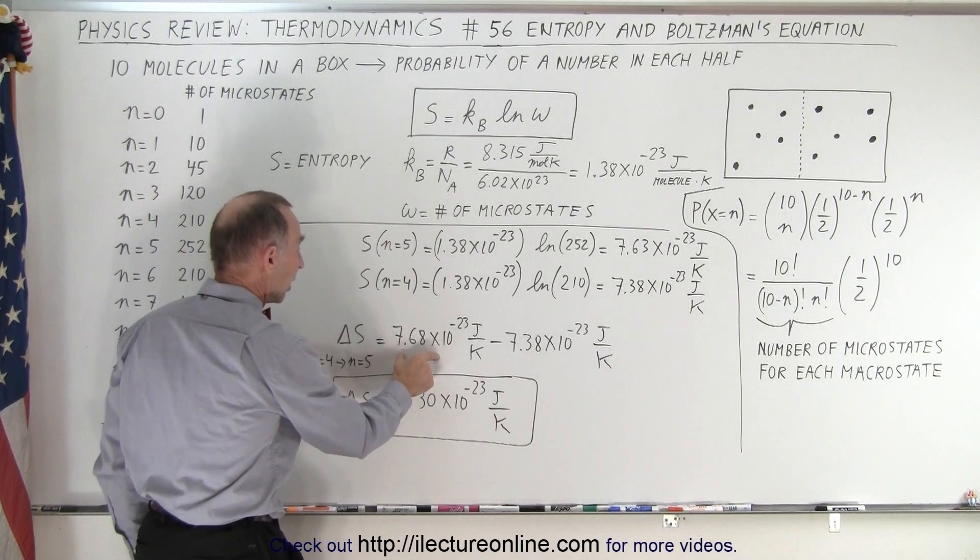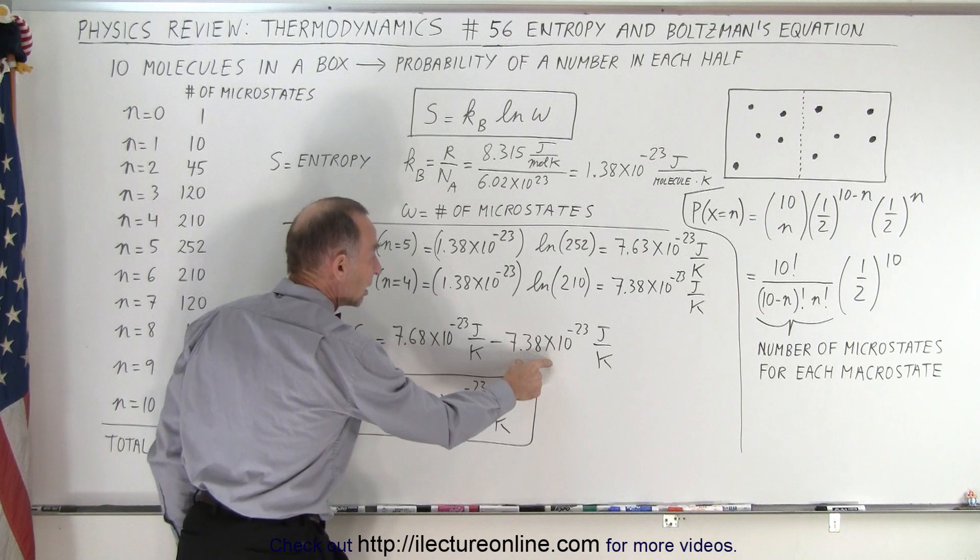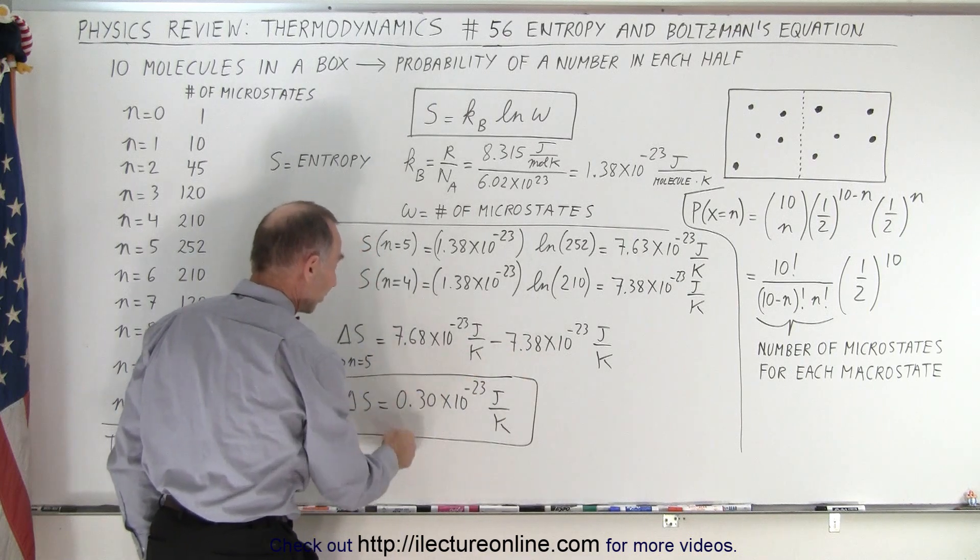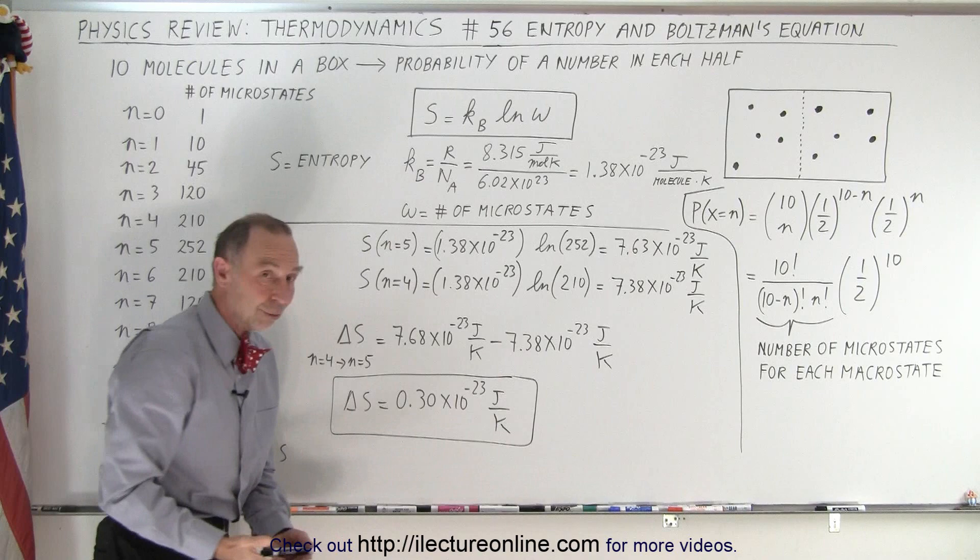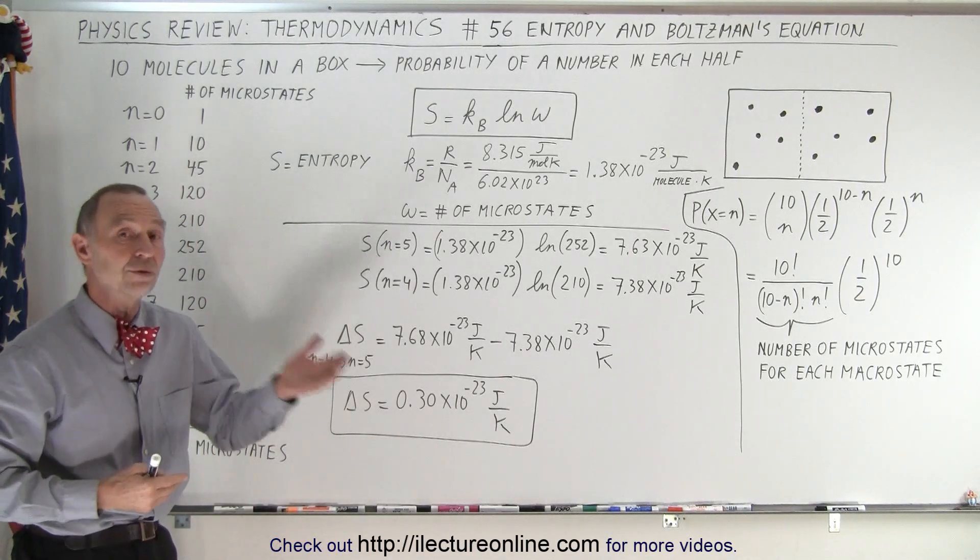So we take the entropy of the final state minus the entropy of the initial state. And notice the difference is indeed a positive number, meaning entropy increased from going from n equals 4, a more ordered state, to n equals 5, a more disordered state.